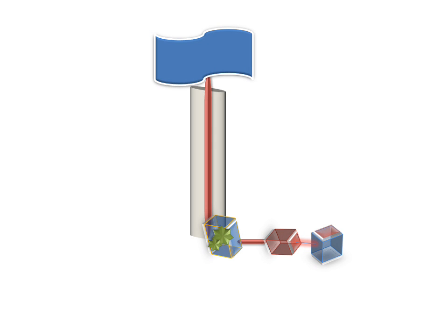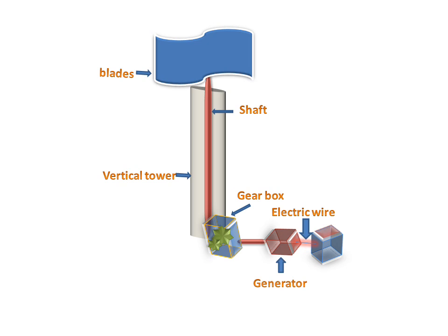Here is the complete image of the vertical windmill turbine and its parts. There are blades, a shaft, a vertical tower, a gearbox, and an electric wire connected to a generator. There is also a battery for storing the current. Now see the animation of the figure.